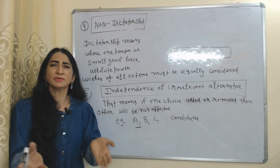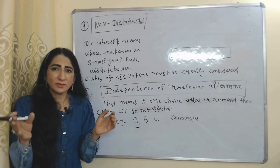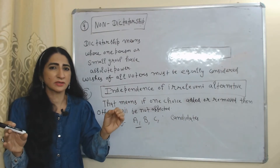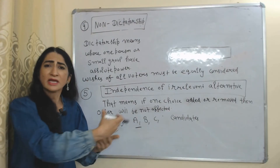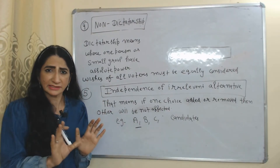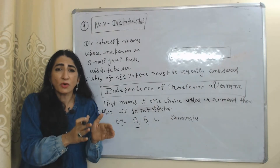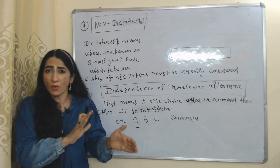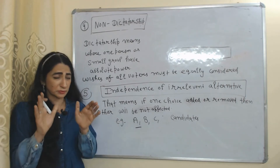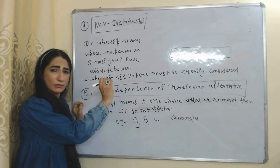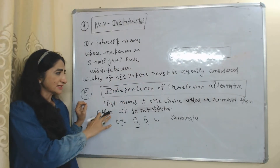The fourth condition is non-dictatorship. Dictatorship means one person or a small group has absolute power without considering others. Non-dictatorship means the complete absence of dictatorship — one person or small group should not have absolute power, and the wishes of all voters must be equally considered.